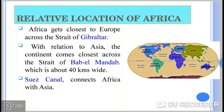In terms of relative location, Africa gets close to Europe across the Straits of Gibraltar and close to Asia via the Straits of Bab-el-Mandeb, which is around 40 km wide. The Suez Canal also connects Africa with Asia.